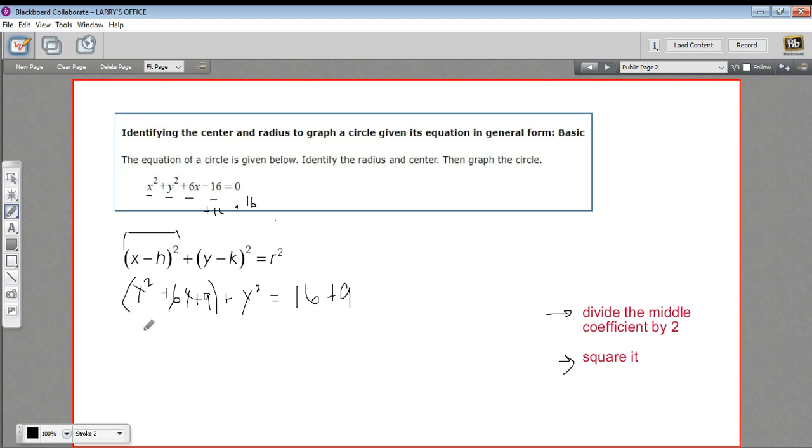This is equivalent to the expression x plus 3 squared. And you can verify that by multiplying x plus 3 times x plus 3, and you'll get this. This is the reason we completed the square. When you complete the square, that middle coefficient divided by 2 is what goes in here.